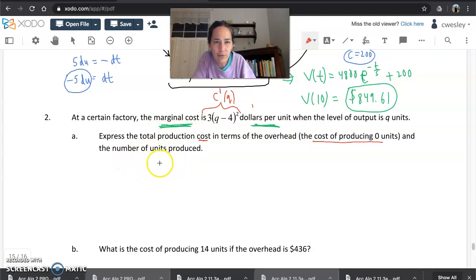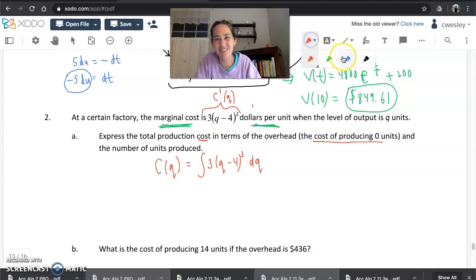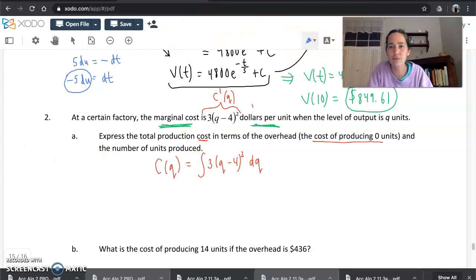So c prime of q. Express the total production cost in terms of the overhead, the cost of producing zero units. We'll talk about that. And the number of units produced. So let's just find an integral. We want c of q. The cost in terms of q should be the integral of 3q minus 4 squared. And we'll put a dq there as well. Now I want to admit something. We're deriving with respect to q here. I want to admit that we actually could do this in a simpler way, couldn't we? We could just foil this one out and integrate it with a normal power rule for anti-differentiation. Because we're having fun with u sub, and because this is an easier u sub example, I'll just continue with the pattern. I'll just try to practice with it for each one of these.